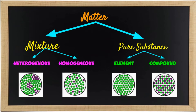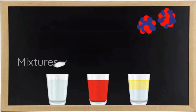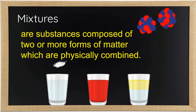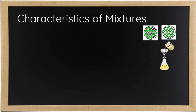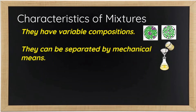Are you ready to learn more about mixtures? Let's start. Mixtures are the physical combination of two or more substances in which the identities are retained. Here are the characteristics of mixtures: they have variable compositions, they are composed of two or more forms of matter, and they can be separated by mechanical means — it can be filtration, evaporation, or condensation.